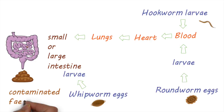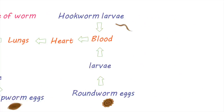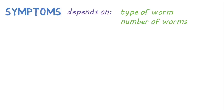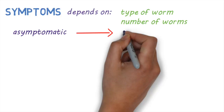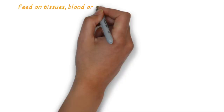People can be infected with more than one type of worm at the same time. The symptoms depend on the type of worm and the number of worms living in the intestine. People with very few worms may have no symptoms at all, while people with a lot of worms can have a range of symptoms. These worms can feed on tissues, blood, or nutrients, and there can be blood loss and inflammation at the sites where they attach.